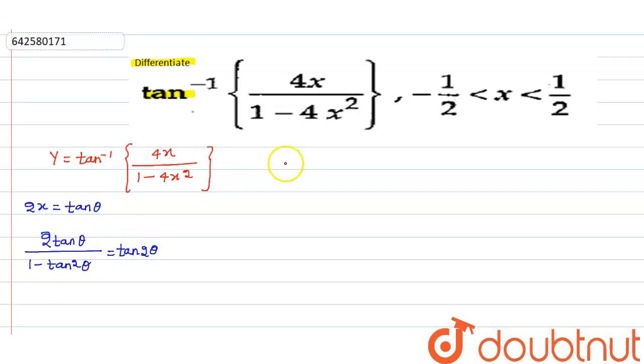So this function transforms into y equals tan inverse tan 2 theta. This is equal to y equals 2 theta. And theta can be written as tan inverse 2x, so y equals 2 times tan inverse 2x.